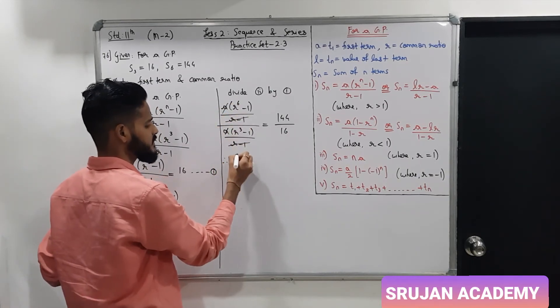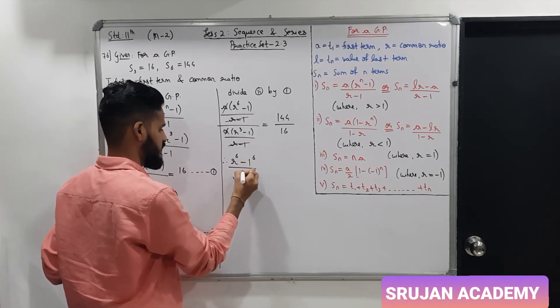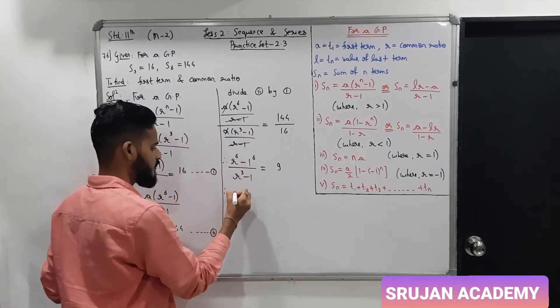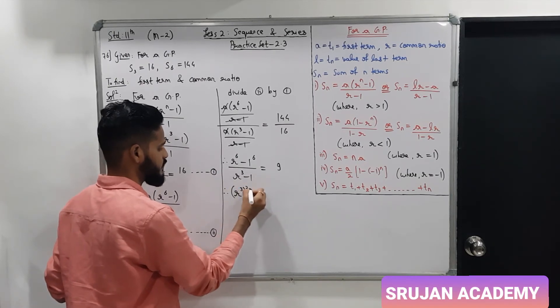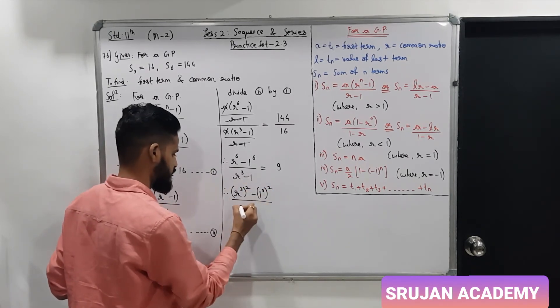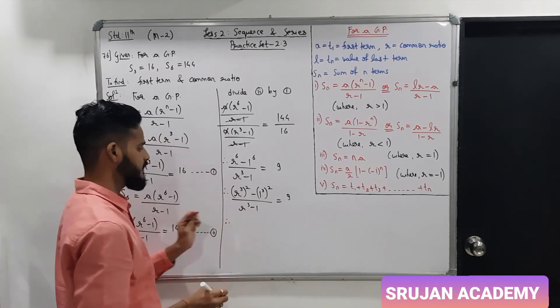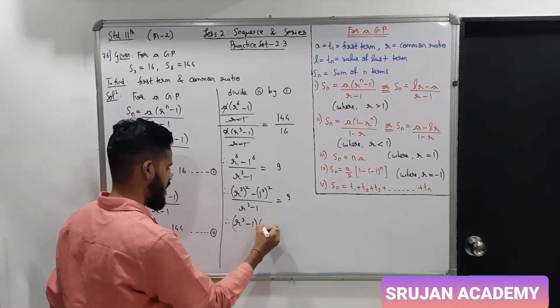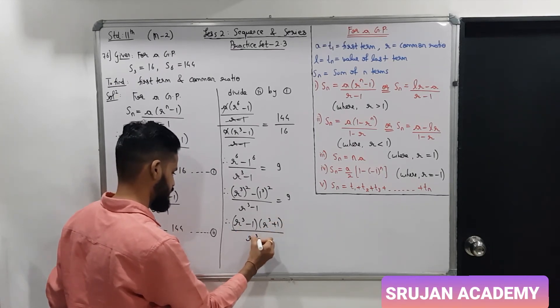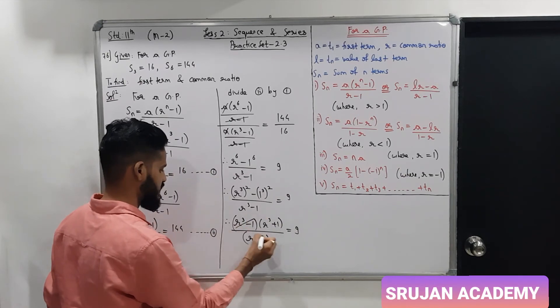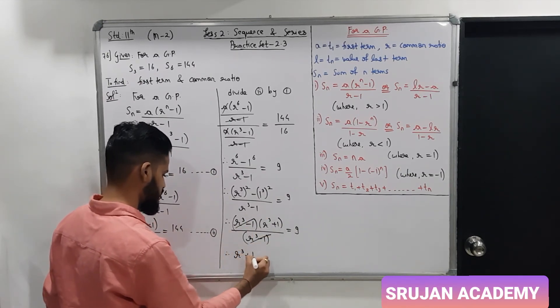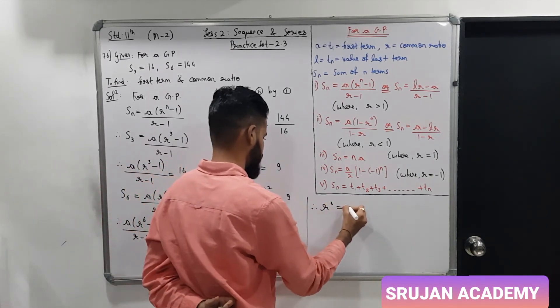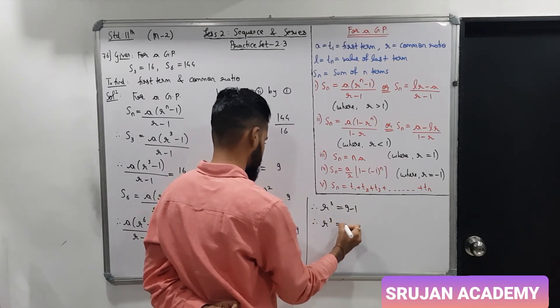So, R raise to 6 minus 1 upon R cube minus 1 is 9. Using the formula a raise to 6 minus b raise to 6 is a cube plus b cube into a cube minus b cube, R cube plus 1 cancel out. R cube plus 1 is 9.